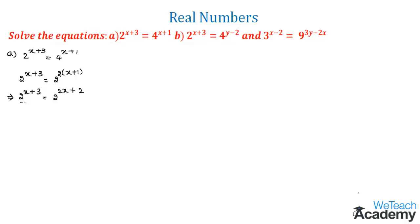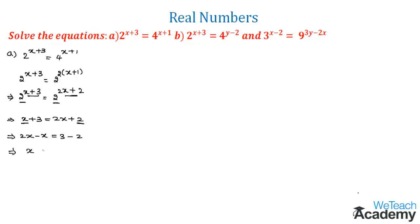We observe that the bases are equal, so by equating the powers we get x + 3 = 2x + 2. Collecting variable and constant terms separately, we get 2x - x = 3 - 2, which gives x = 1. Therefore the value of x is 1.